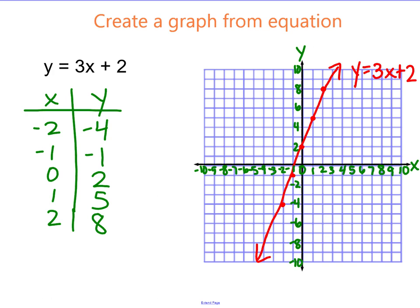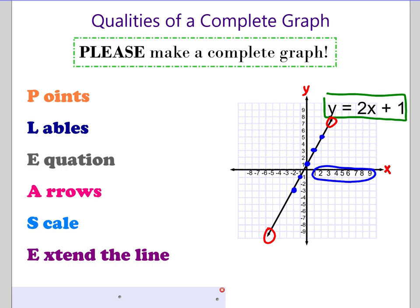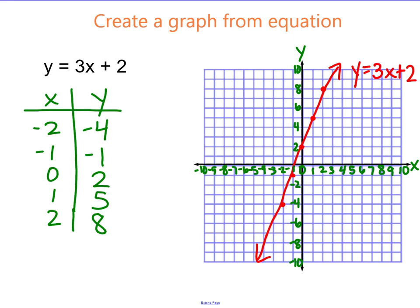Just to make sure, I put my points, I have my labels, I wrote my equation, I put arrows to show the line keeps going, I have a scale on my X and Y axis, and I extended the line. So this right here is an example of a complete graph. When you set up a graph, you should be setting it up like this and including all of these things. Remember, please make a complete graph.